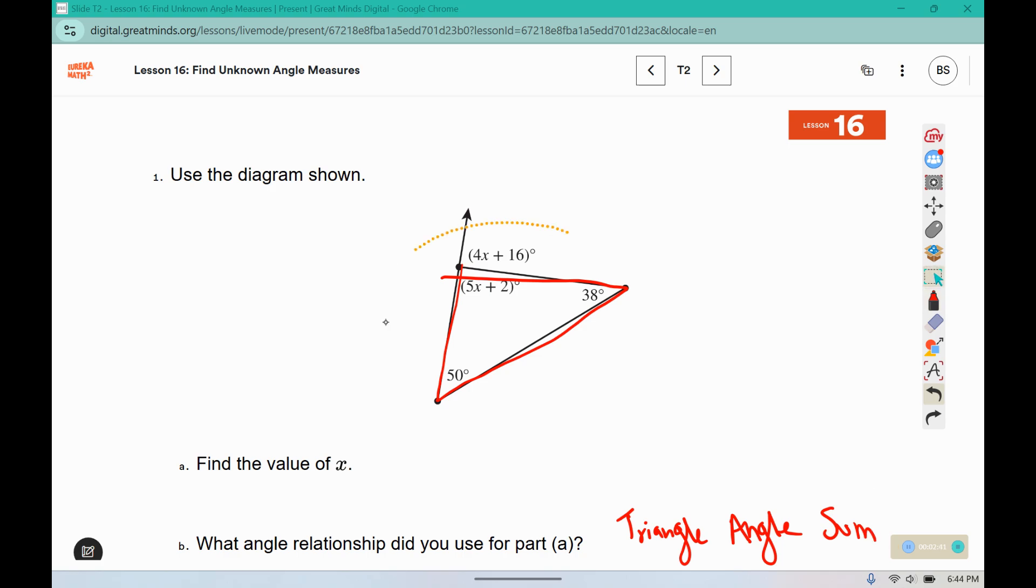You could also use the sum of the remote interior equals the exterior. It's up to you. You can solve it and get the same answer regardless. So I'm going to work with the triangle. So I have an angle that is 50 degrees, an angle that is 38 degrees, and an angle that is labeled with 5x plus 2. And I know that the three angles inside that triangle have a sum of 180 degrees.